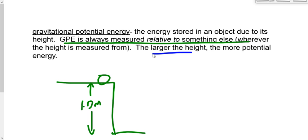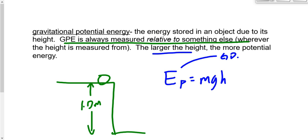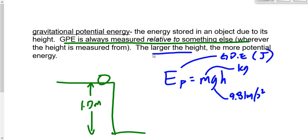Here's how we calculate it: EP equals mgh. EP is gravitational potential energy, measured in joules — it's a scalar. M is mass in kilograms. G is 9.81 meters per second squared on Earth, different on the moon or Mars. H is the height above whatever reference point you choose — the ground, the table, whatever — measured in meters.